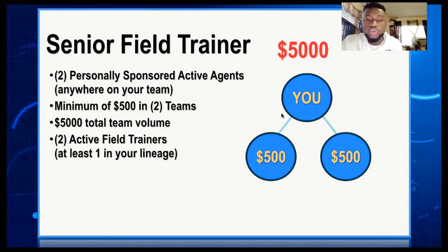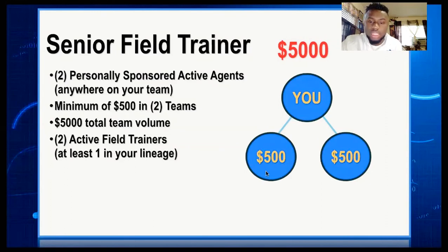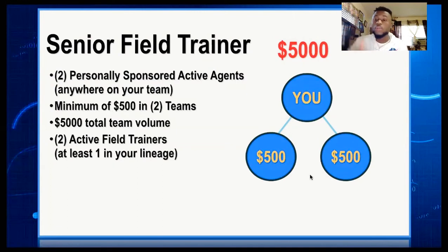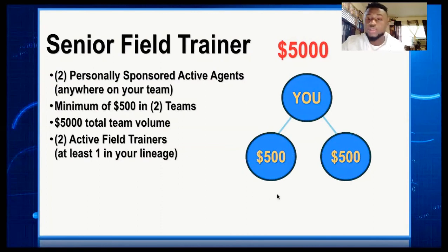So in summary: you need 2 people who became Field Trainers, you need 2 people signed directly below you, and you need the volume — 5000 total in volume. That means when you add your own volume with the people in your downline and it gives you 5000 total, you've met the volume requirement and become a Field Trainer. In the back office you can see all of this — how much volume you have, how much you're missing. Then you need the 2 Field Trainers.